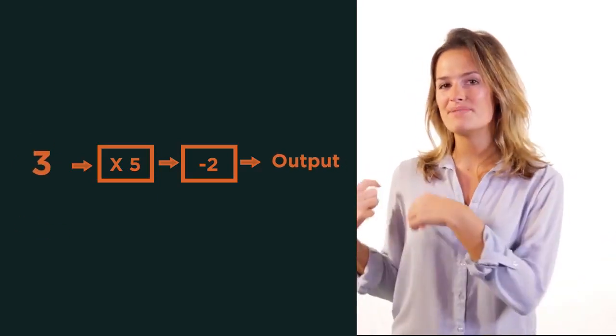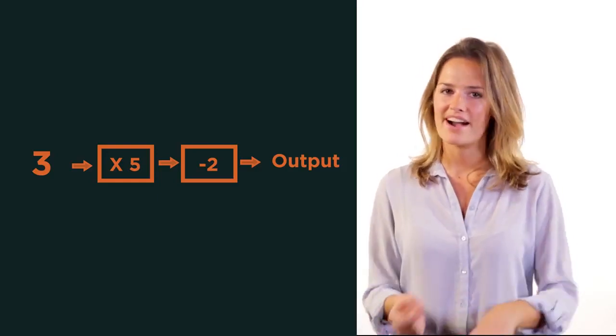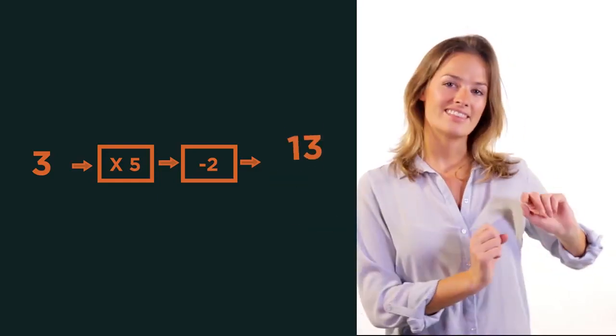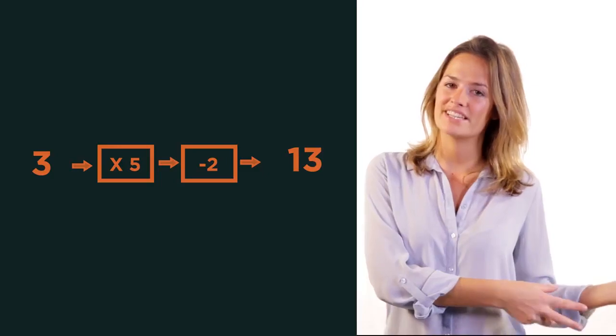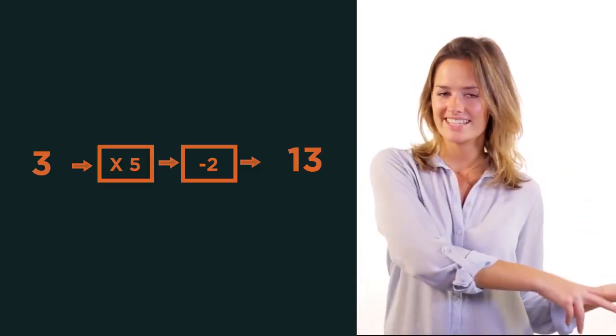So if we input 3 into a function, multiply by 5, subtract 2, then 13 is outputted. 3 has transformed into 13.